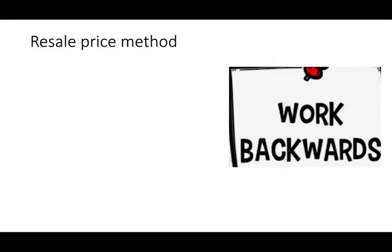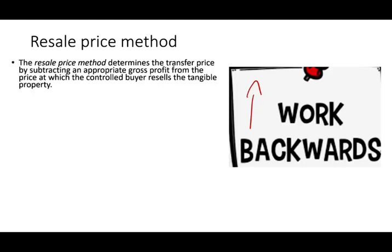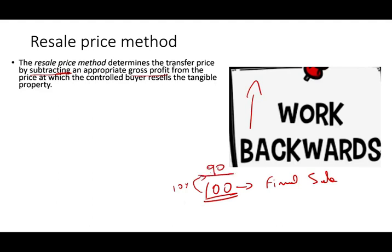Another method is called the resale price method. Think of this method as working backwards — taking the final price and trying to factor a profit margin into the selling activity. The resale price method determines the transfer price by subtracting an appropriate gross profit from the price at which the controlled buyer resells the tangible property. For example, if we're selling something to another party and we know that party is going to sell it for $100, and they should make a 10% profit, we can sell it to them for $90.